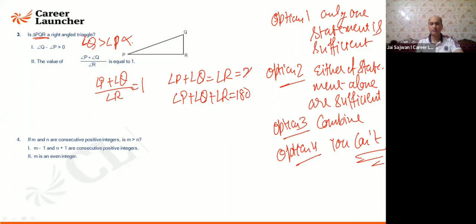And both of them are same, p plus q is x, r is x, that is 180. Can I say 2x is equal to 180? x comes out to be 90 degrees. So yes, it is a right angle triangle.